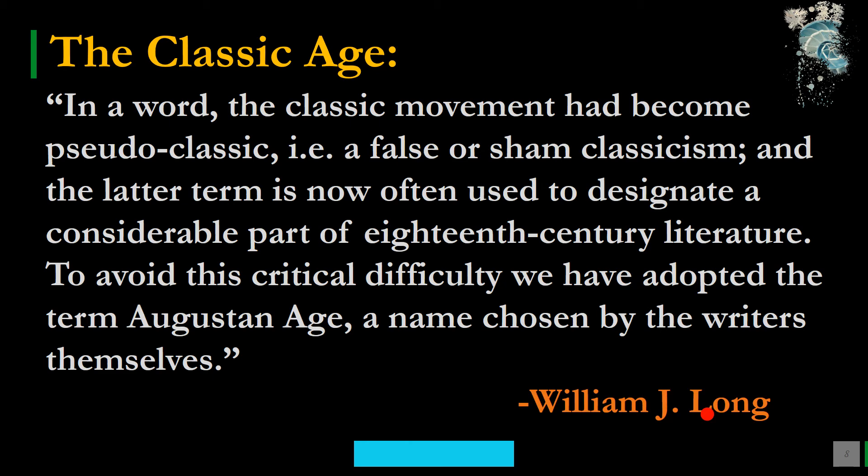'To avoid this critical difficulty, we have adopted the term Augustan Age, a name chosen by the writers themselves.' It is clear what term should be used to designate 18th century literature. You can use Classical Age, 18th century literature, or Augustan Age, but Classical Age is avoided by many scholars — Augustan Age is the preferred term.